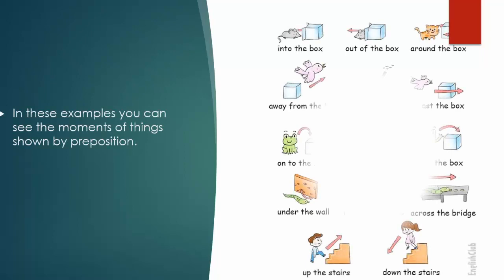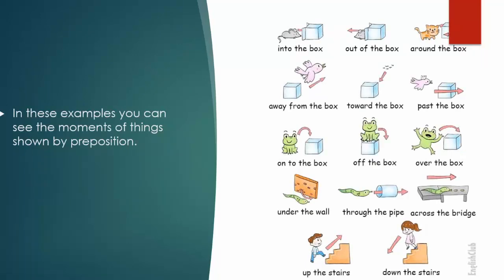Now I'm going to show you some more pictures where you can see the movement of position — the direction. First, into the box — where is the mouse going? Into the box; it is moving inside the box. Next is out of the box — where is the mouse moving? Out of the box. Around the box — the kitten is circling around the box. Away from the box — the bird is flying away from the box. Towards the box — these birds are flying towards the box, meaning they are coming to the box.